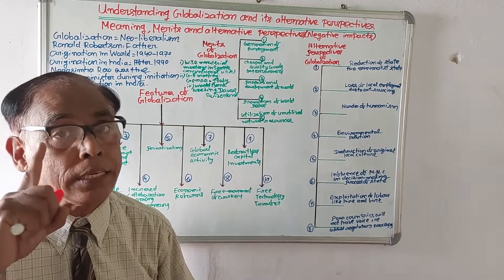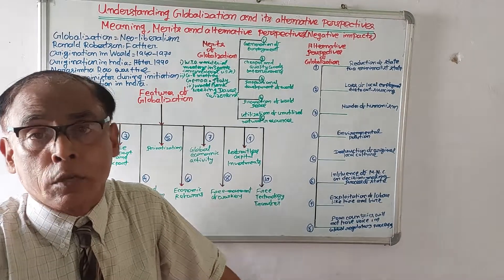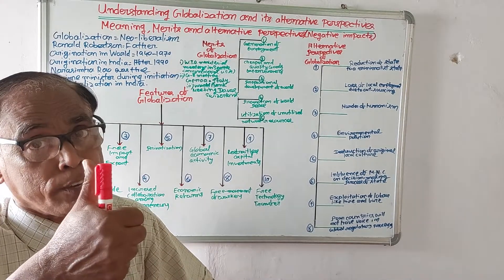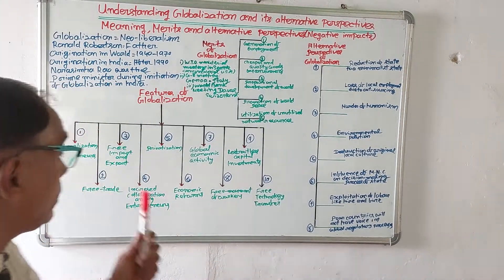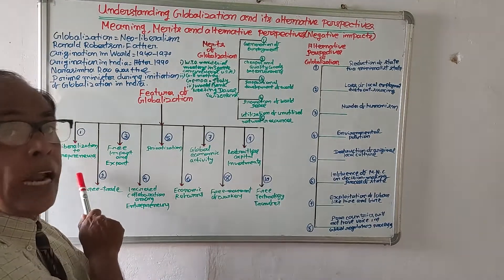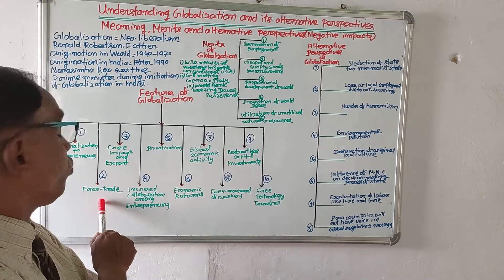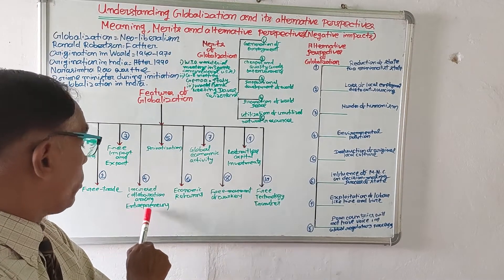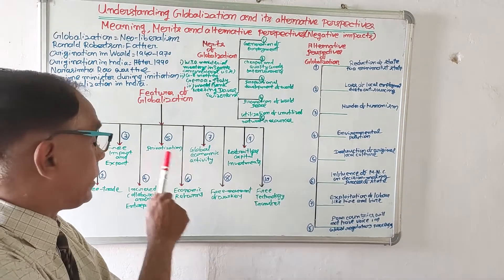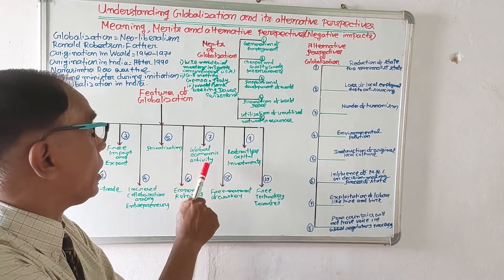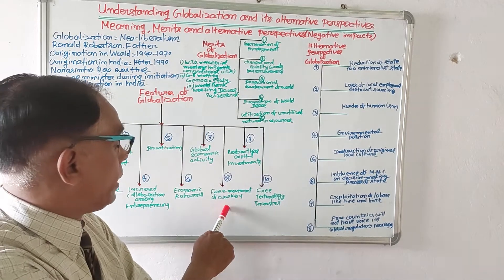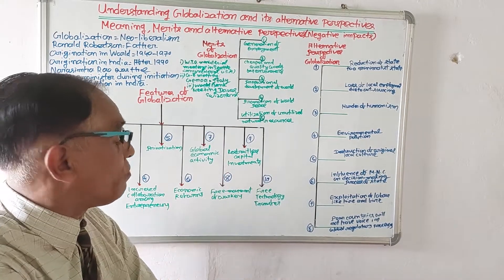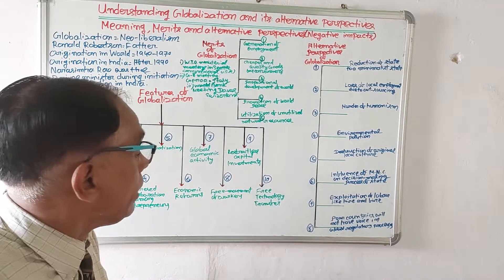So we are clear what is globalization. In simple language, globalization means to convert the fragmented world into a single family. But appropriately, globalization means: liberalization of entrepreneurs, free trade, free import and export, increased collaboration among entrepreneurs, privatization, economic reforms, global economic activity, free movement of workers, restraint-less capital investment, and finally free technology transfer.